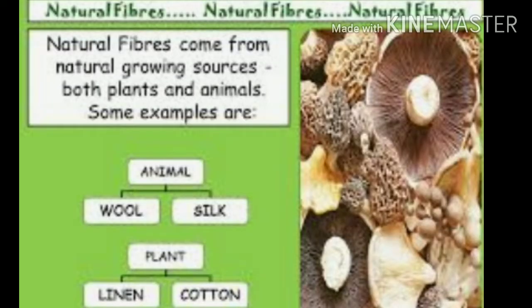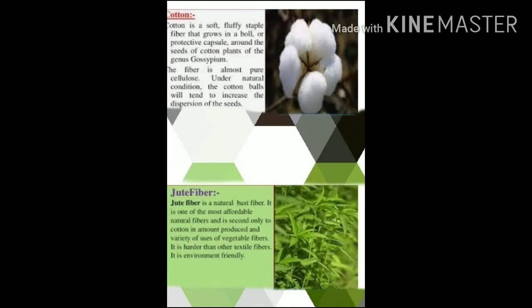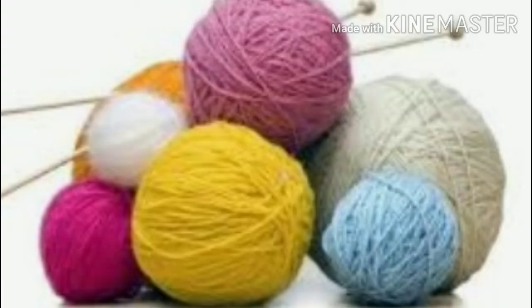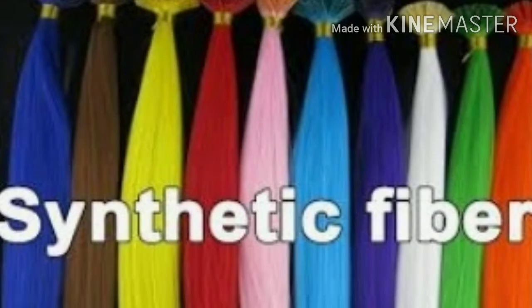Plants and animals are two sources of fibers. Cotton, jute, and coir are some common plant fibers, whereas silk and wool are two animal fibers. Some fibers can be made from chemical substances; such fibers are called synthetic fibers.